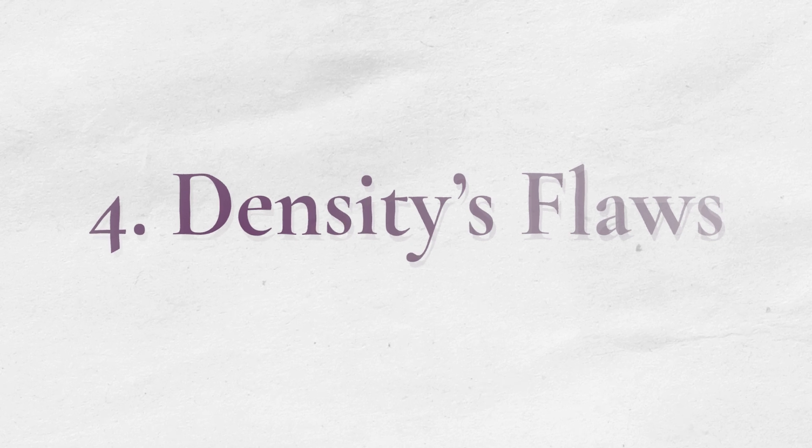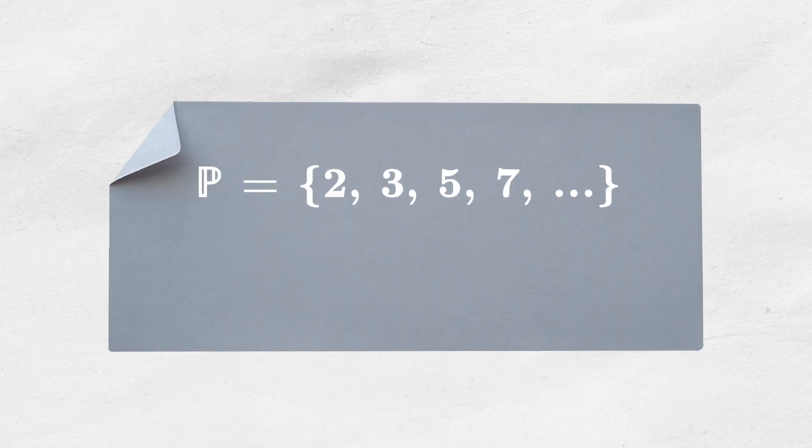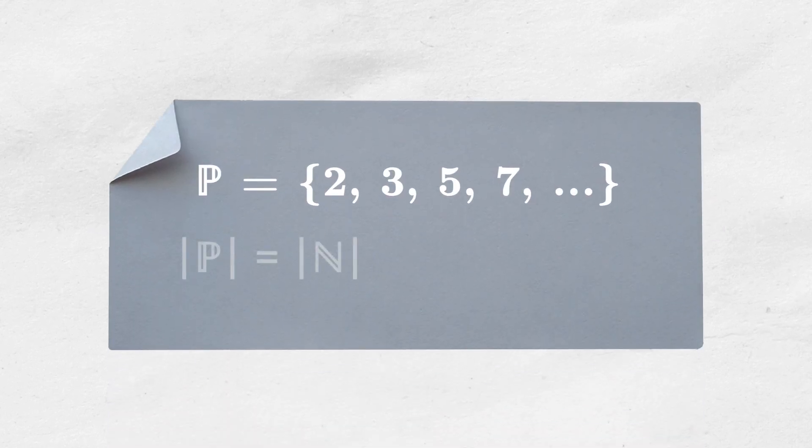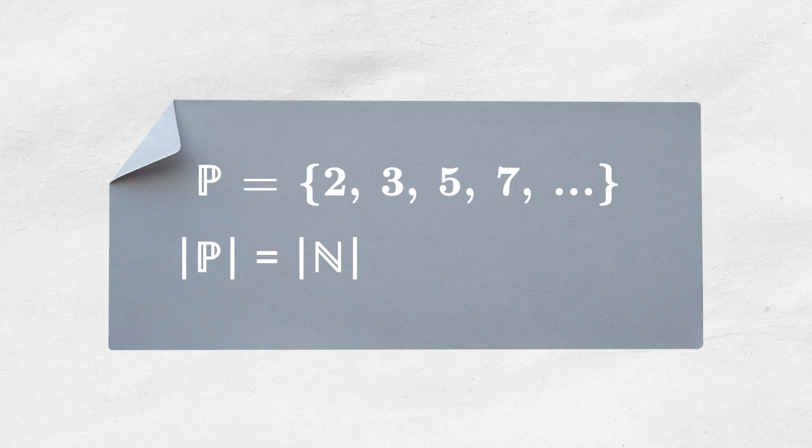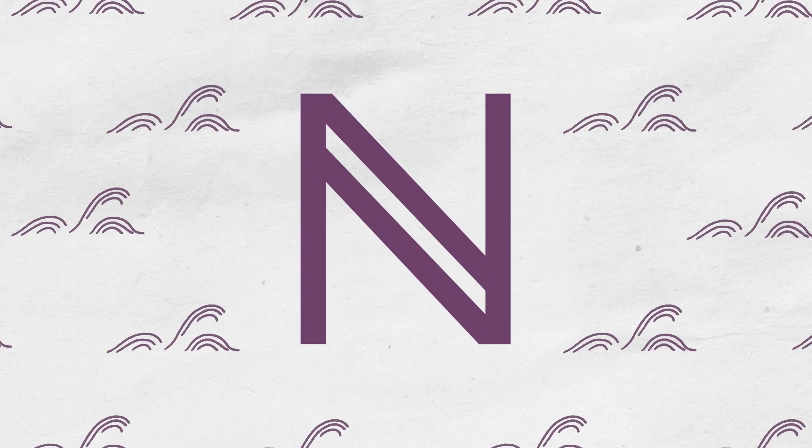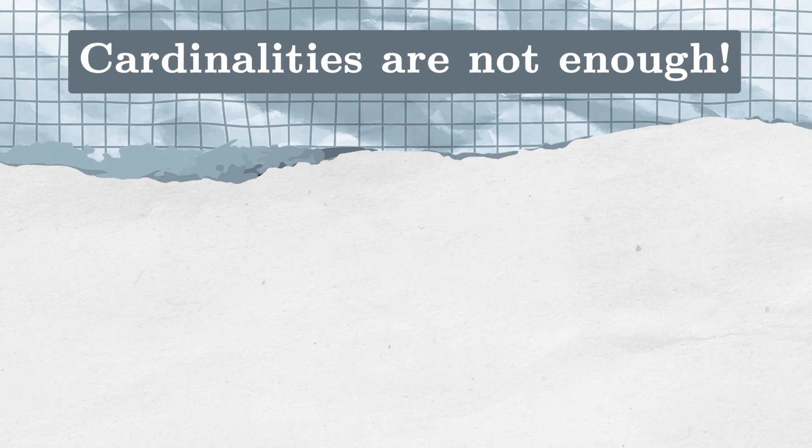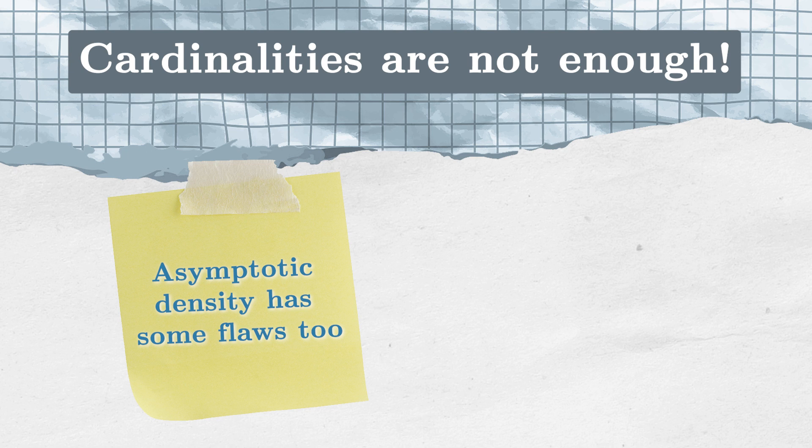Asymptotic density gives you a good view on how big a subset of the set of natural numbers is. For example, the set of prime numbers, despite the fact that it is infinite, has a density equal to zero. The set of primes is merely a drop in the ocean of natural numbers. The simple approach through cardinalities is not sufficient to show that. But asymptotic density is not ideal too.